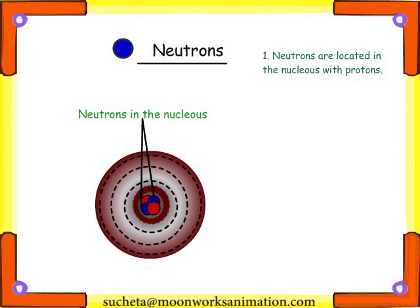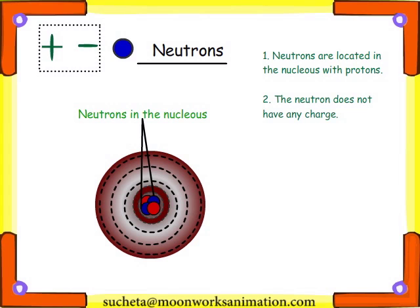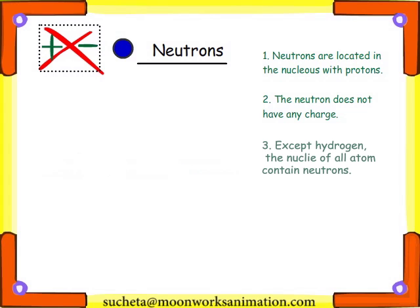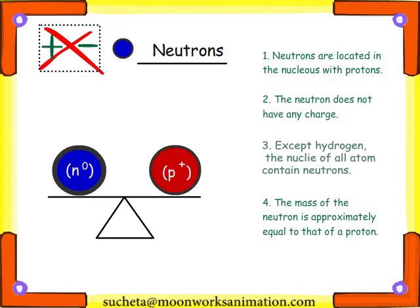Neutrons are located in the nucleus with protons. The neutron does not have any charge. Except hydrogen, the nuclei of all atoms contain neutrons. The mass of the neutron is approximately equal to that of a proton.